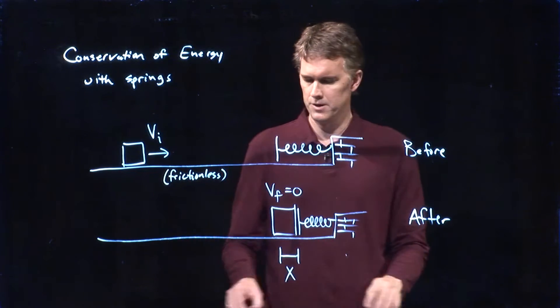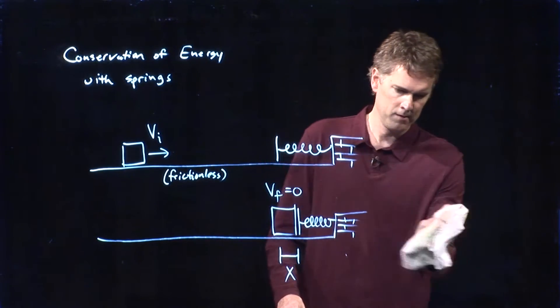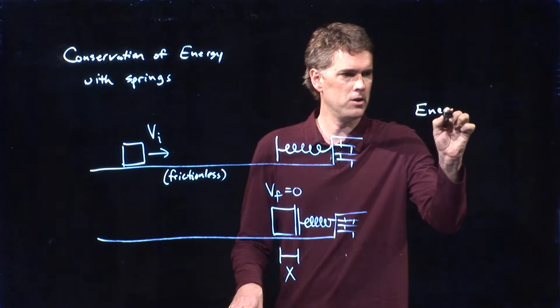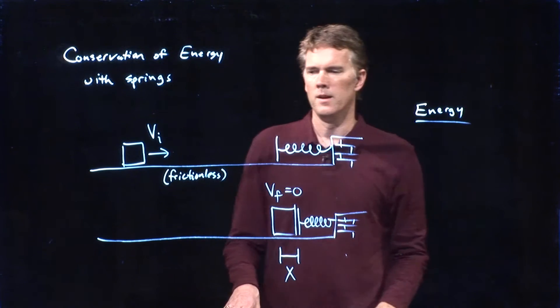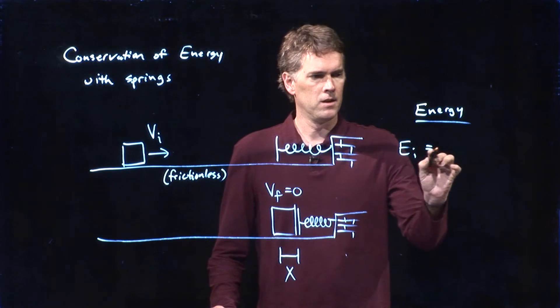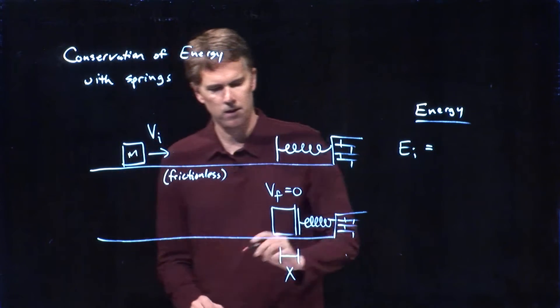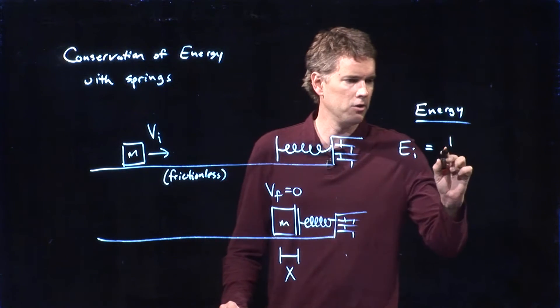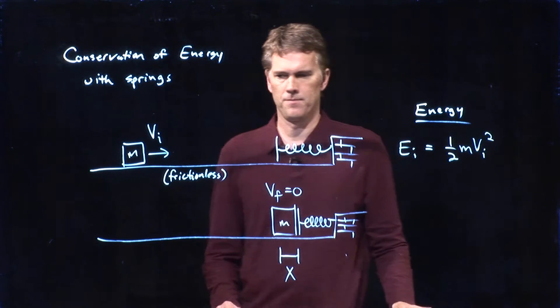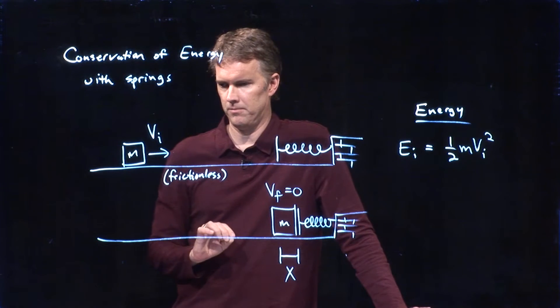Okay, let's write down conservation of energy and see if we can make some sense of it. So energy, in this initial case, there is energy in the moving block. If it's mass m, then it has energy one-half m v i squared. There's no energy anywhere else in the system.